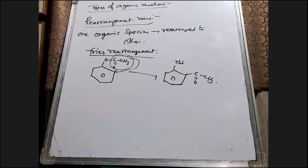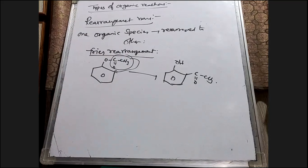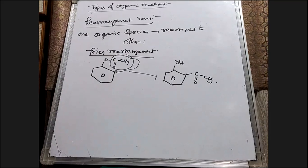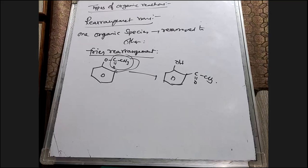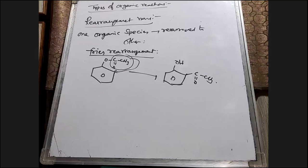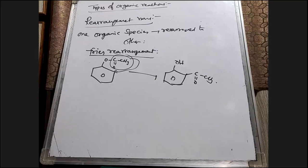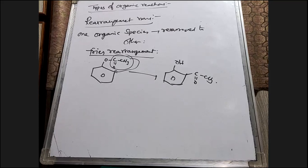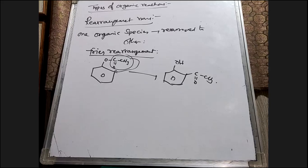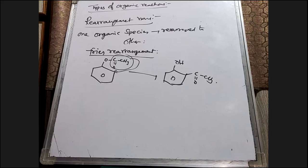So these are the four types of organic reactions. One is addition reaction — the substrate and reagent combine to form a single product. Second is substitution reaction — an atom or group of atoms is replaced by another. Third is elimination reaction — atoms or groups are removed to form multiple bonds. Fourth is rearrangement reaction — one organic species rearranges to another. From an exam point of view, you need to write the definition and give an example for each.